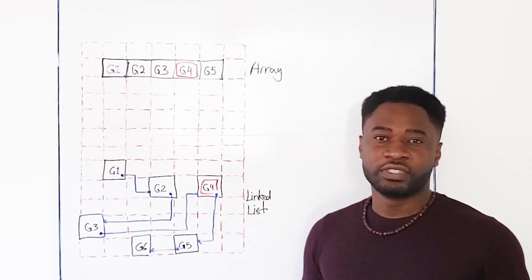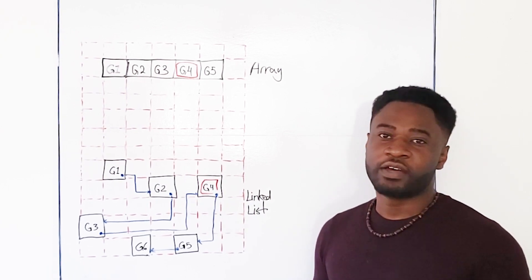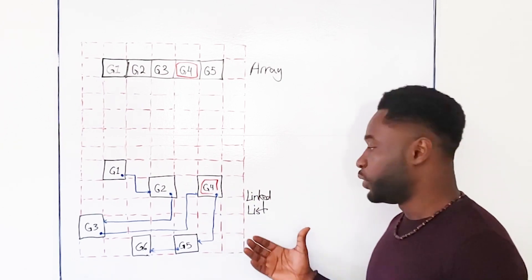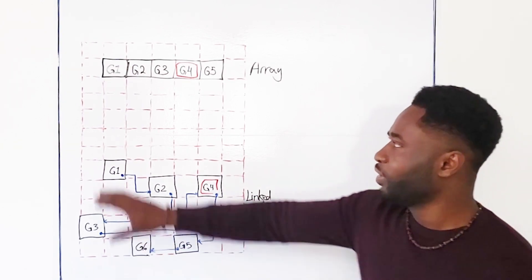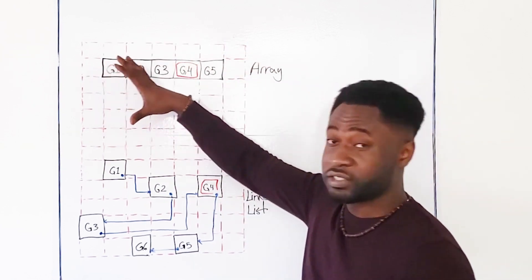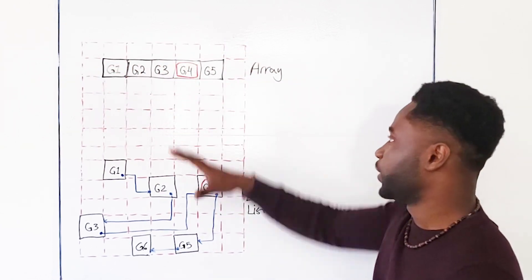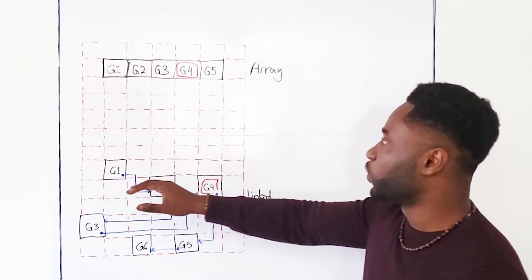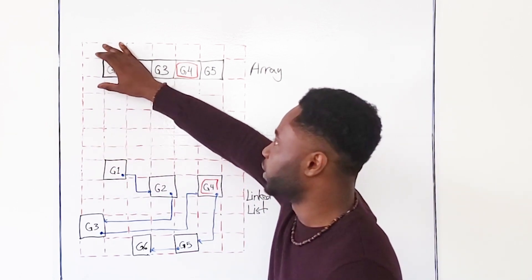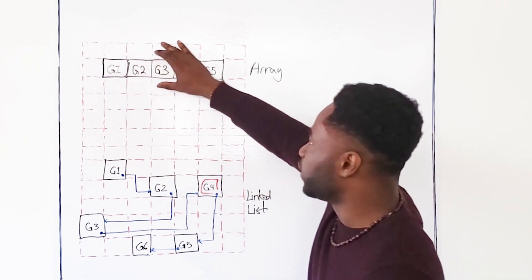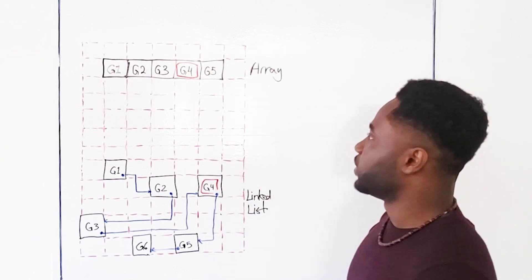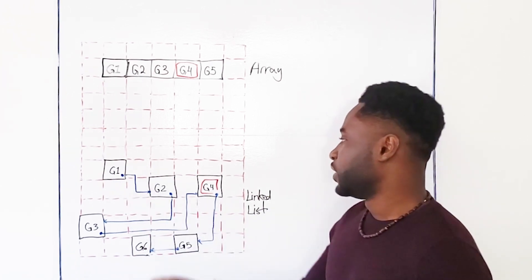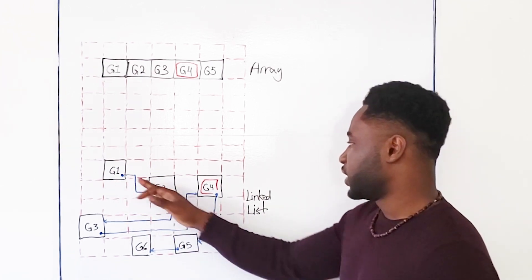So let's get a little bit more technical and talk about how an array and the linked list are stored in our computer's memory. So suppose this grid right here is our computer's memory. With an array, we are basically storing it by reserving a sequence of blocks, just like this. So with the linked list, we're storing items one block at a time, just like this.